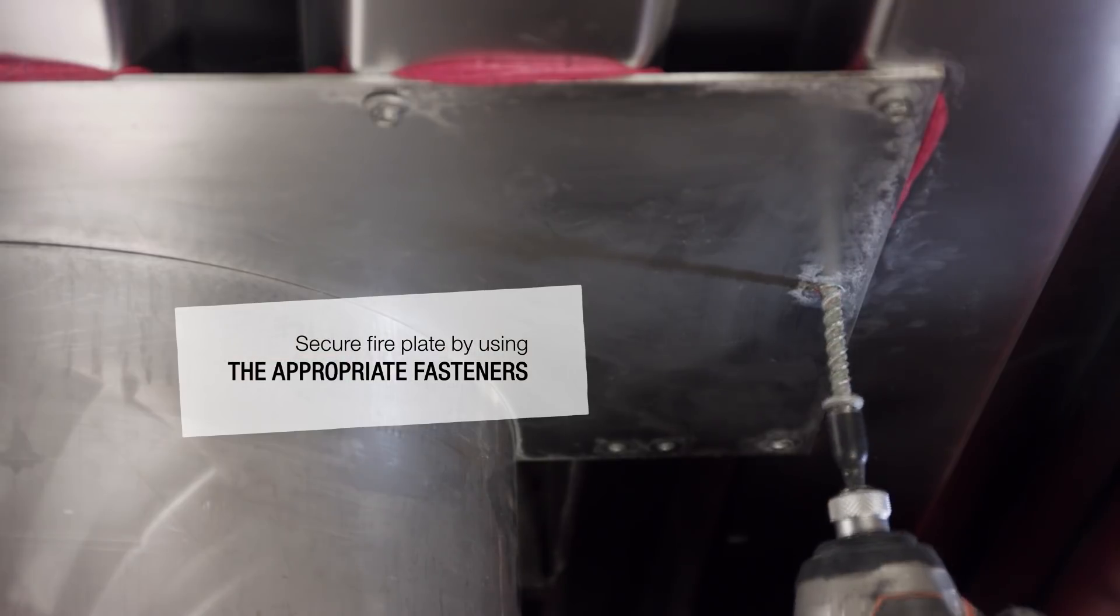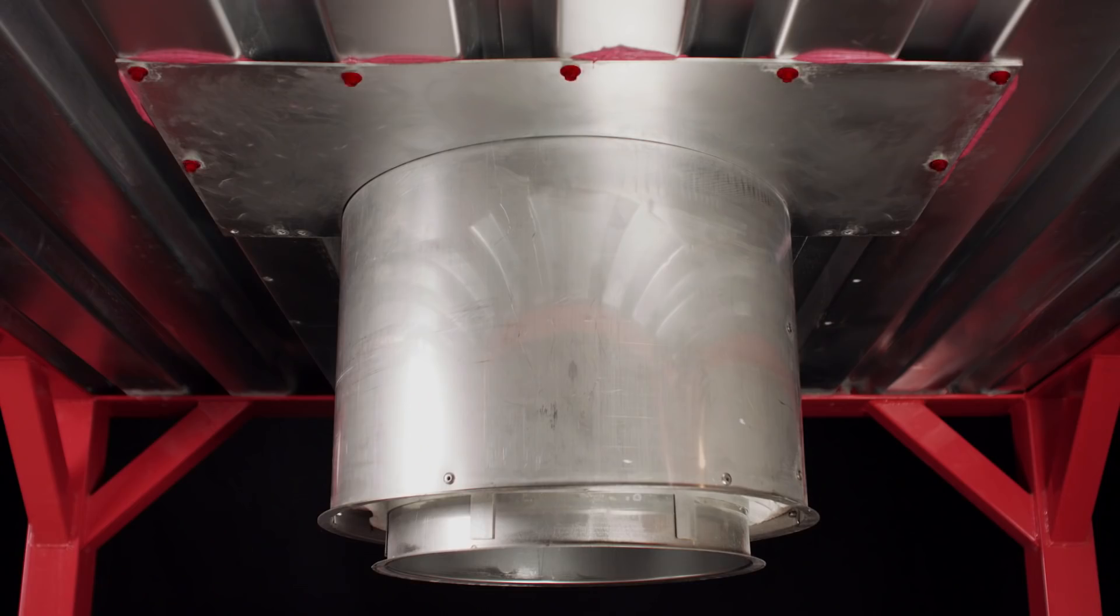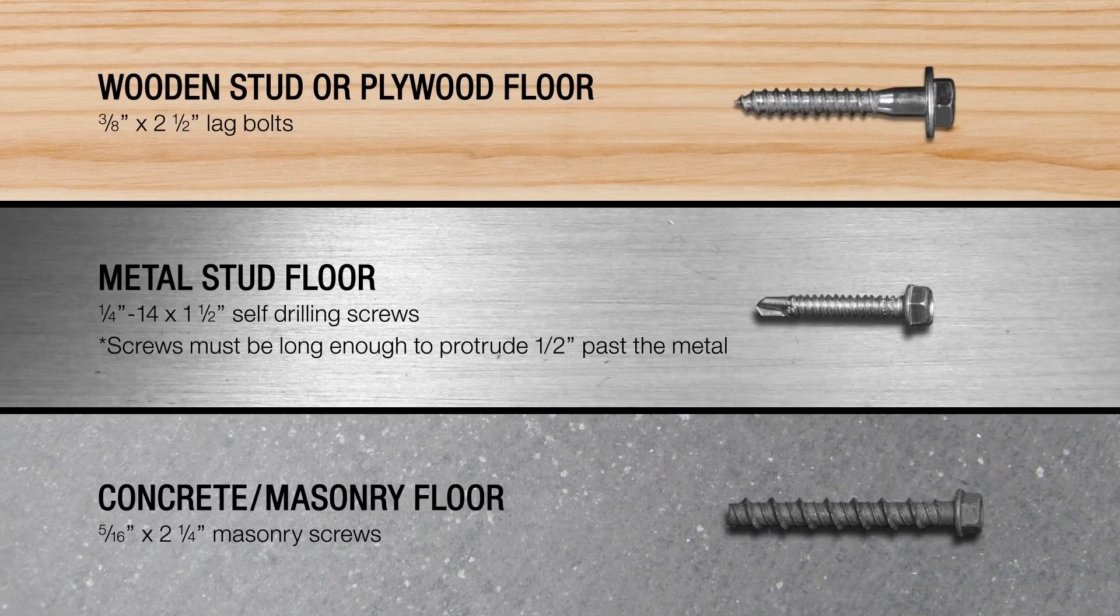Secure the plate to the underside of the floor using the specified fasteners for your floor or ceiling type along the outside edge of the plate. Do not install hardware along the bottom edge of the fire plate. All screws for each floor or ceiling type can be provided by the project contractor or included as an option.